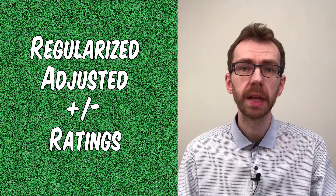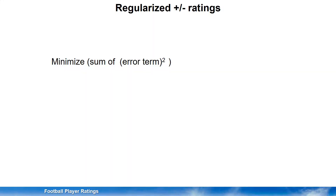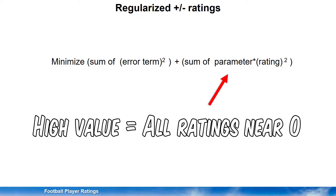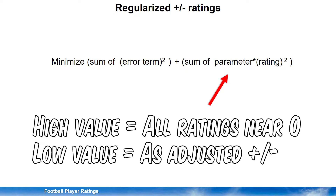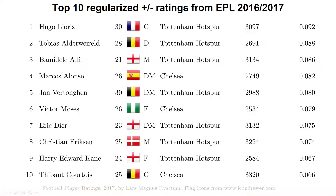This is accomplished by minimizing the sum of the squared error terms plus the sum of the squared ratings times a regularization parameter. The regularization parameter determines how strongly we assume that all players are average. Setting it to zero gives back the normal adjusted plus minus rating model. Calculating regularized adjusted plus minus ratings for the English Premier League 2016-2017 season provides the following list of top players.